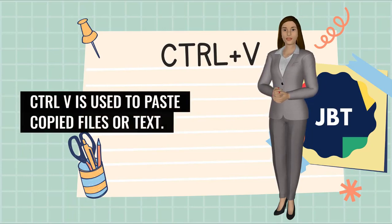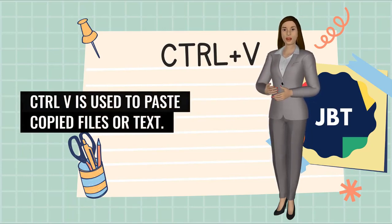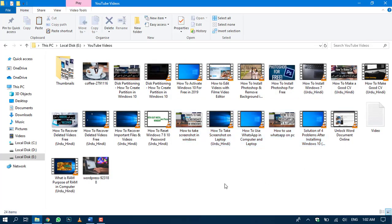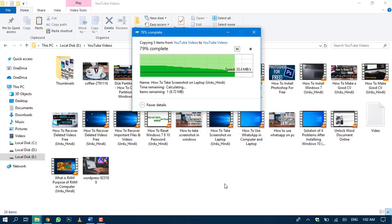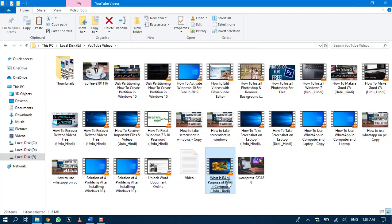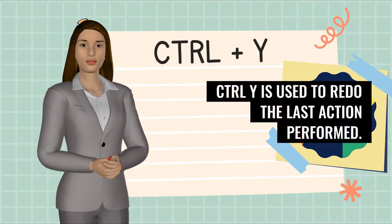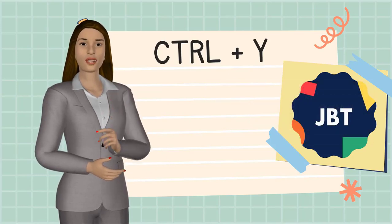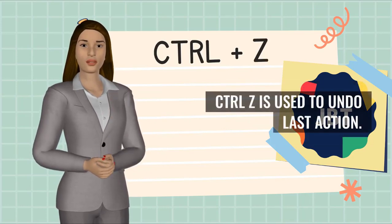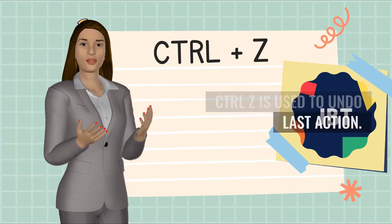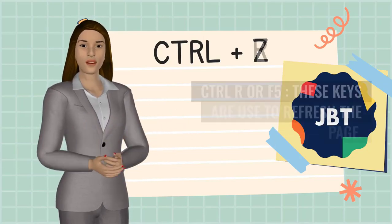Number 5 is Ctrl V. Ctrl V is used to paste copied files or text. Number 6 is Ctrl Y. It is used to redo the last action performed. Number 7 is Ctrl Z. Ctrl Z is used to undo the last action.